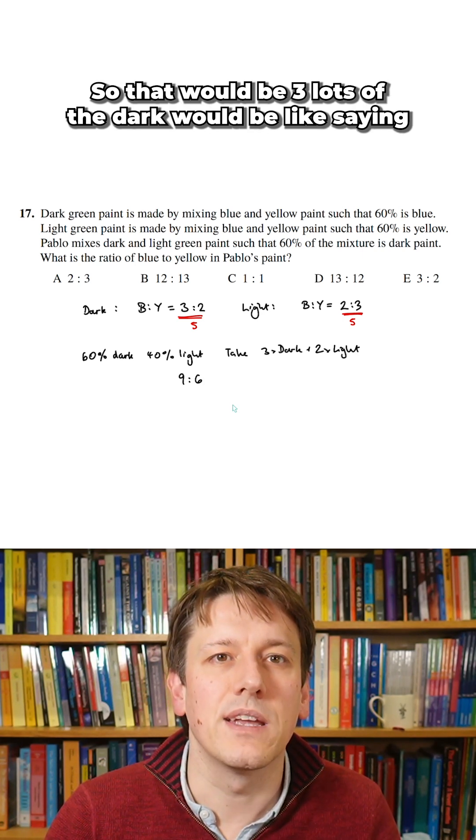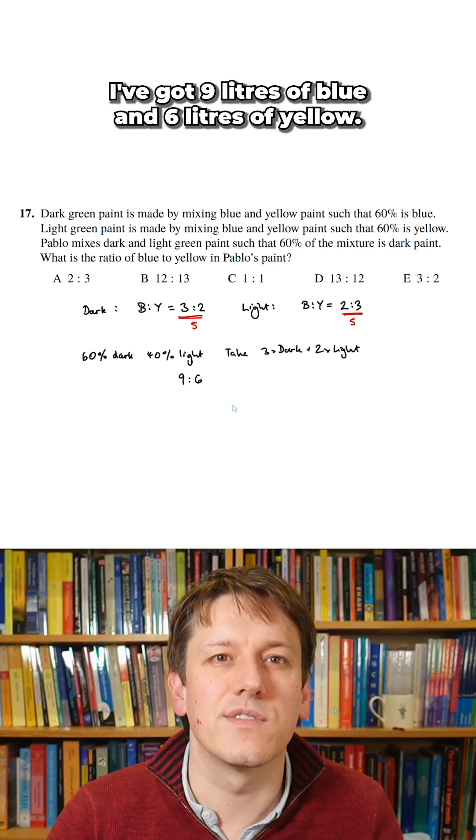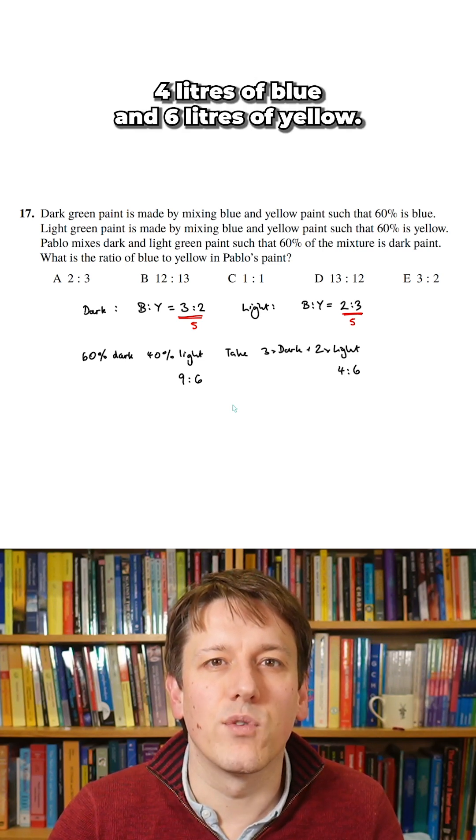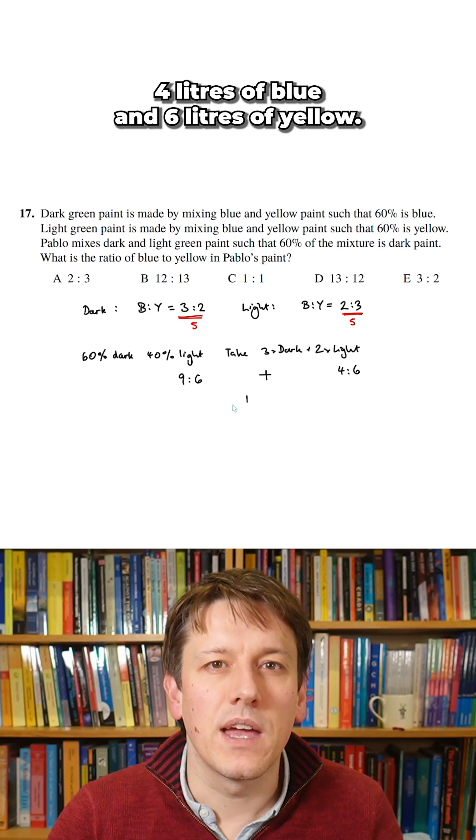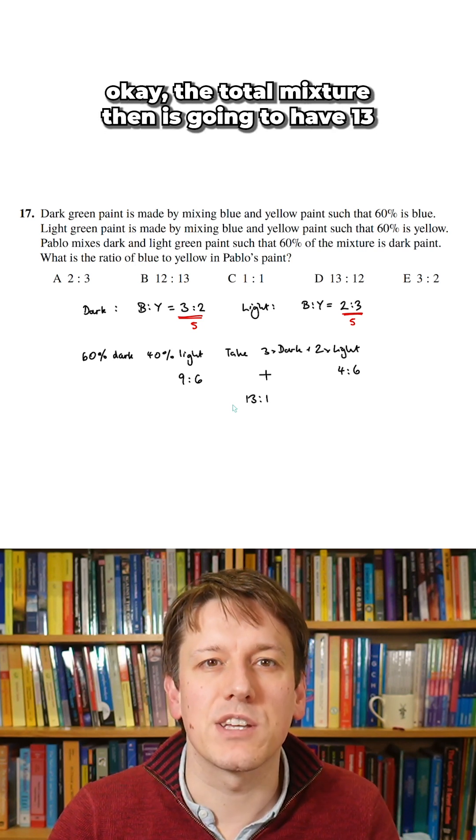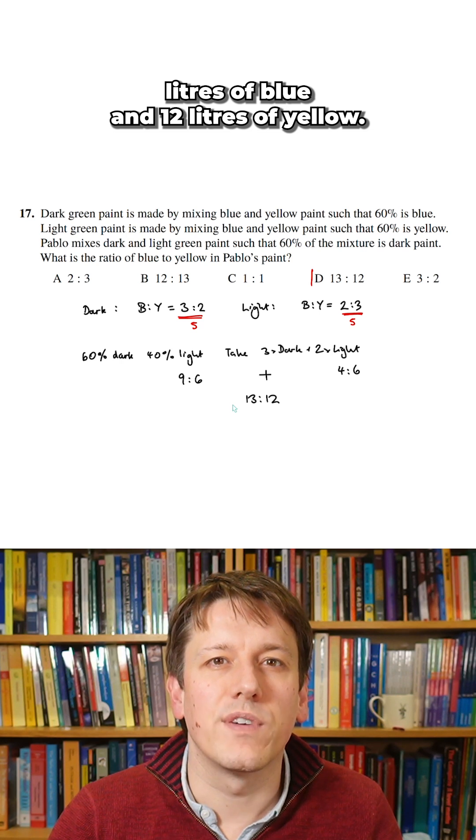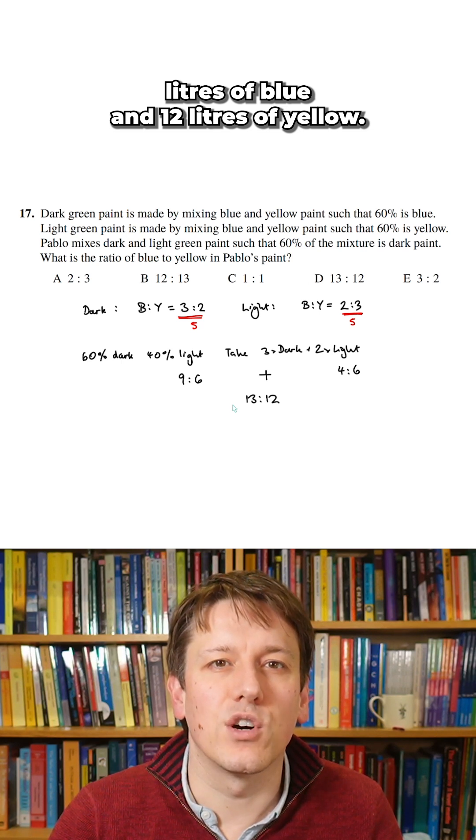So that would be 3 lots of the dark would be like saying I've got 9 liters of blue and 6 liters of yellow, and in the light paint, 4 liters of blue and 6 liters of yellow. And then I just add those together and say, okay, the total mixture then is going to have 13 liters of blue and 12 liters of yellow.